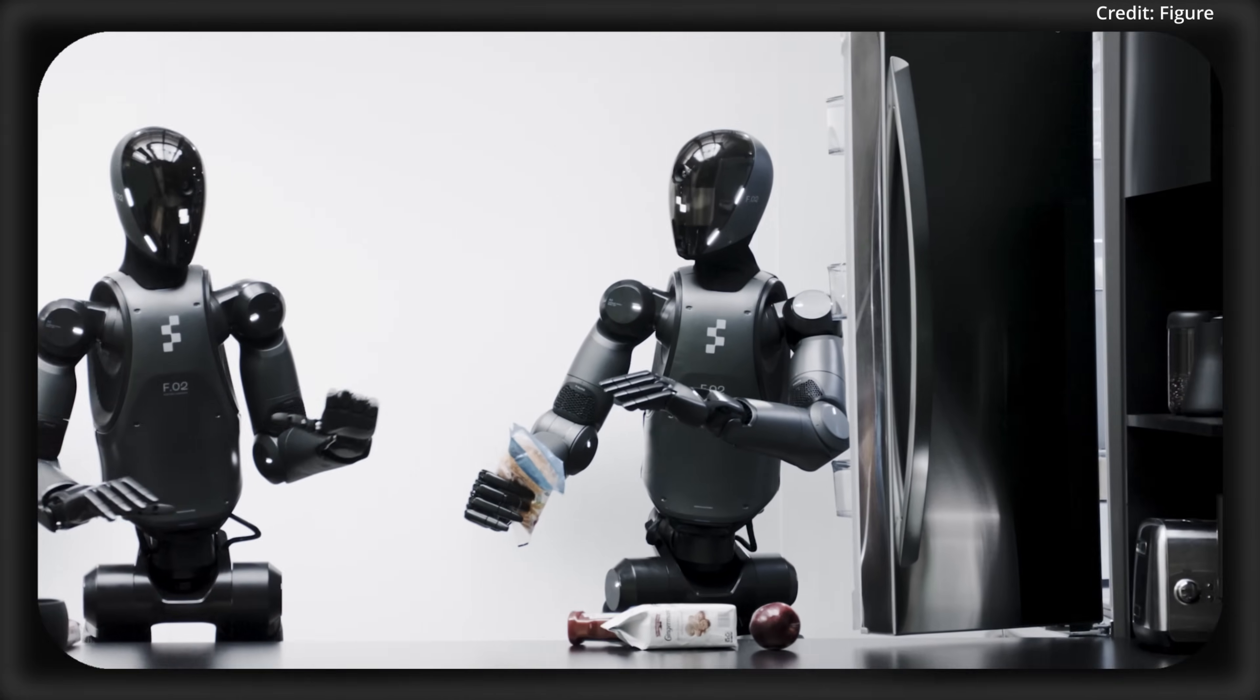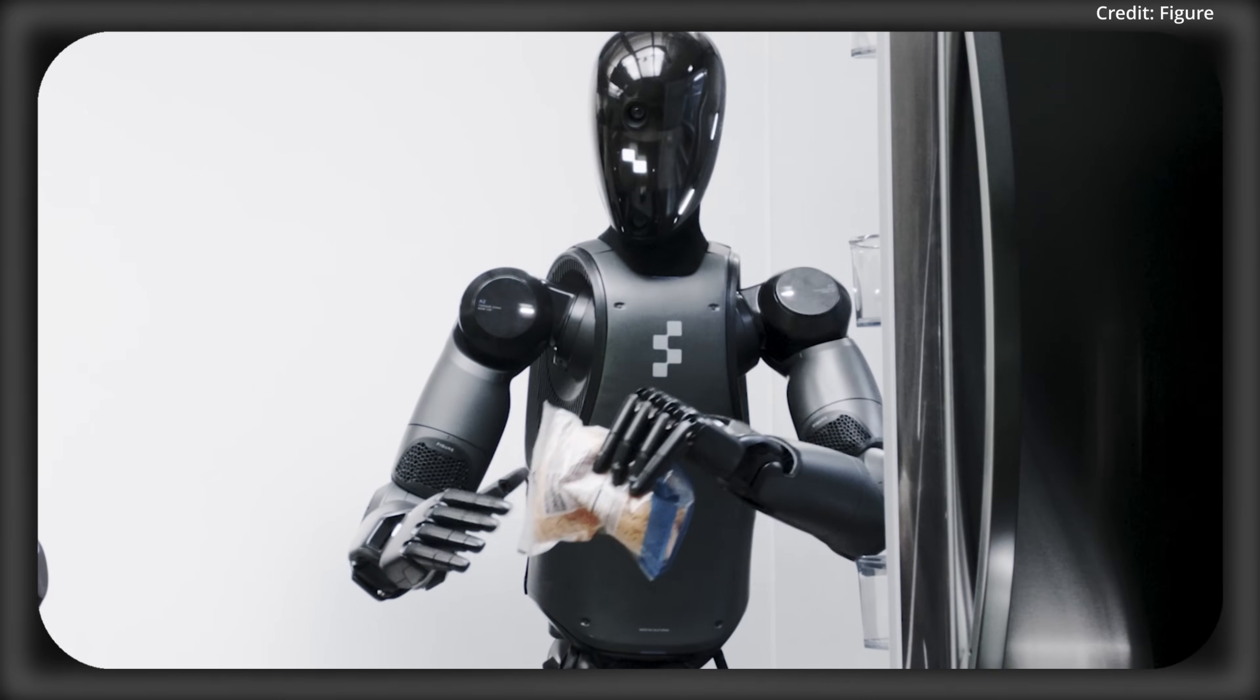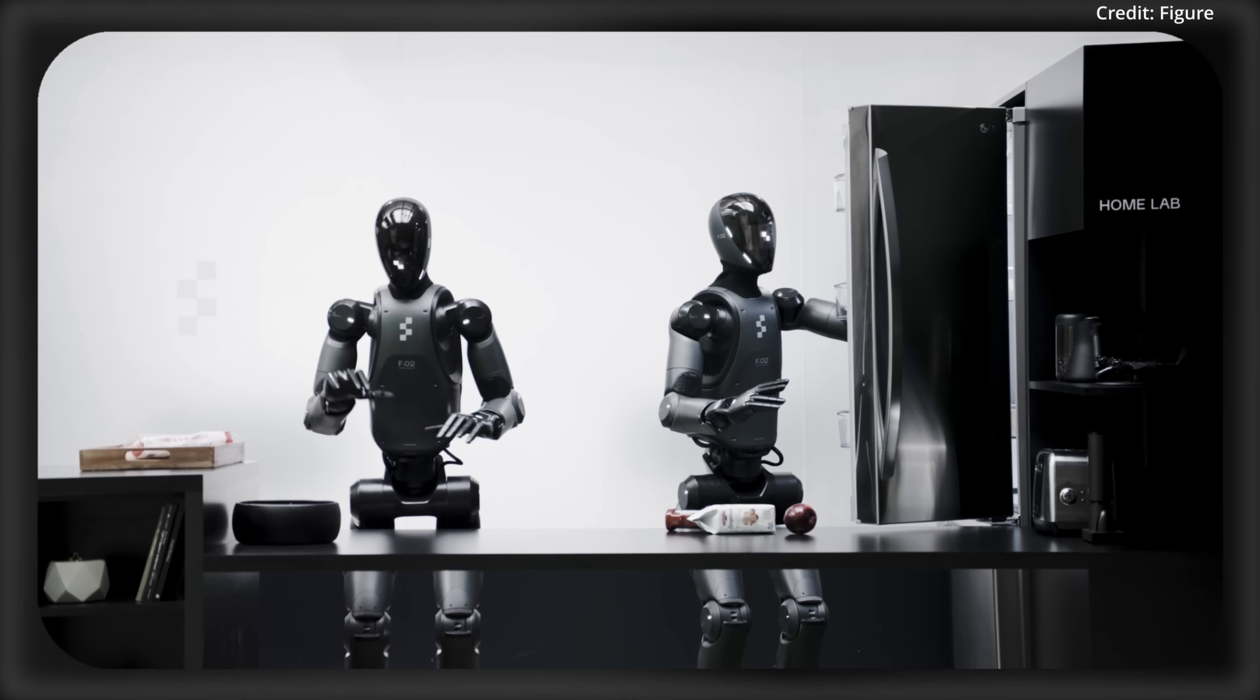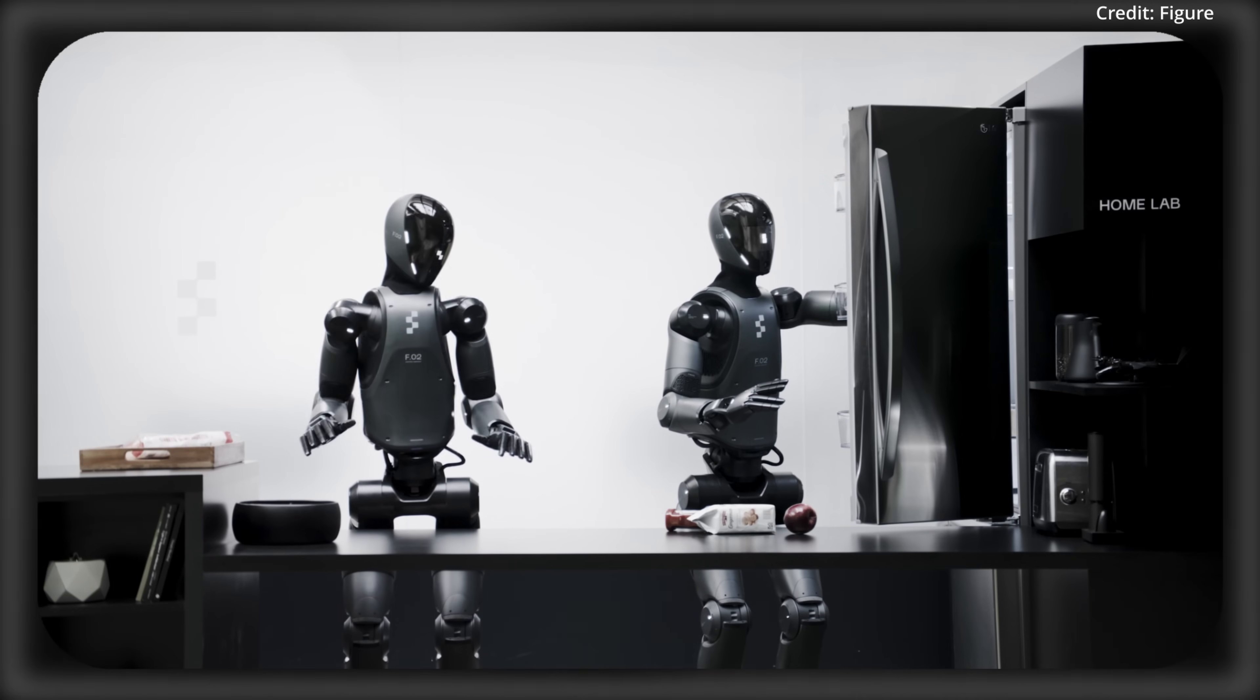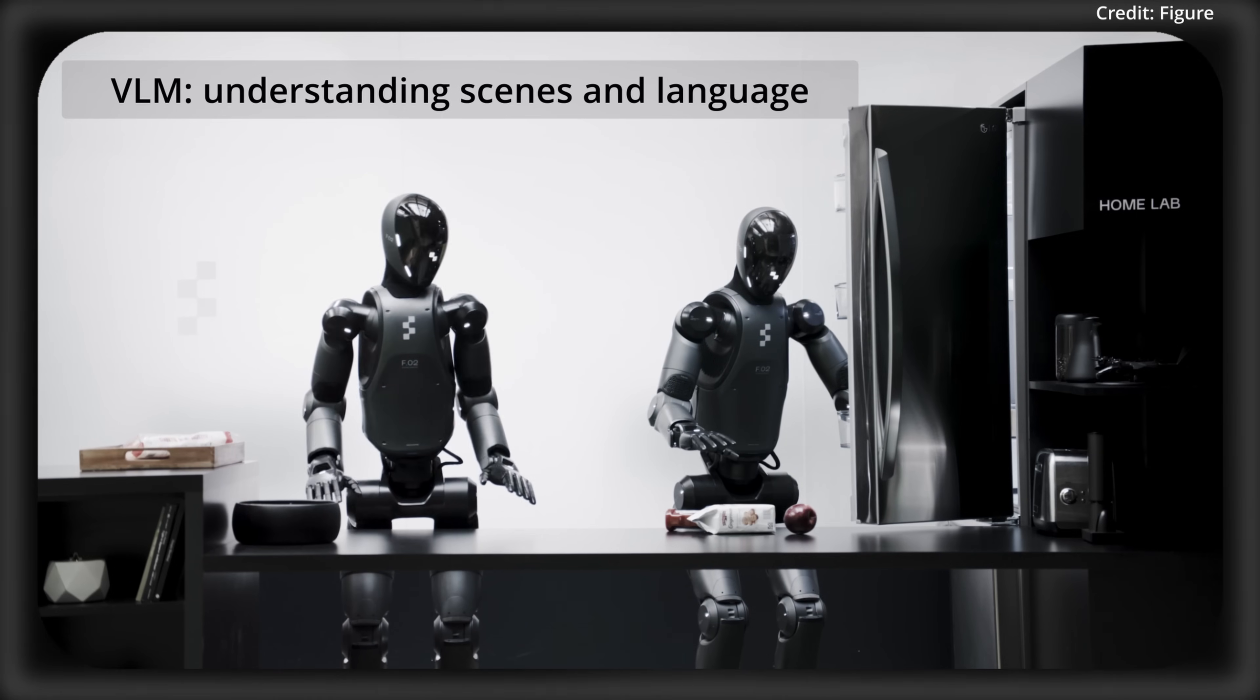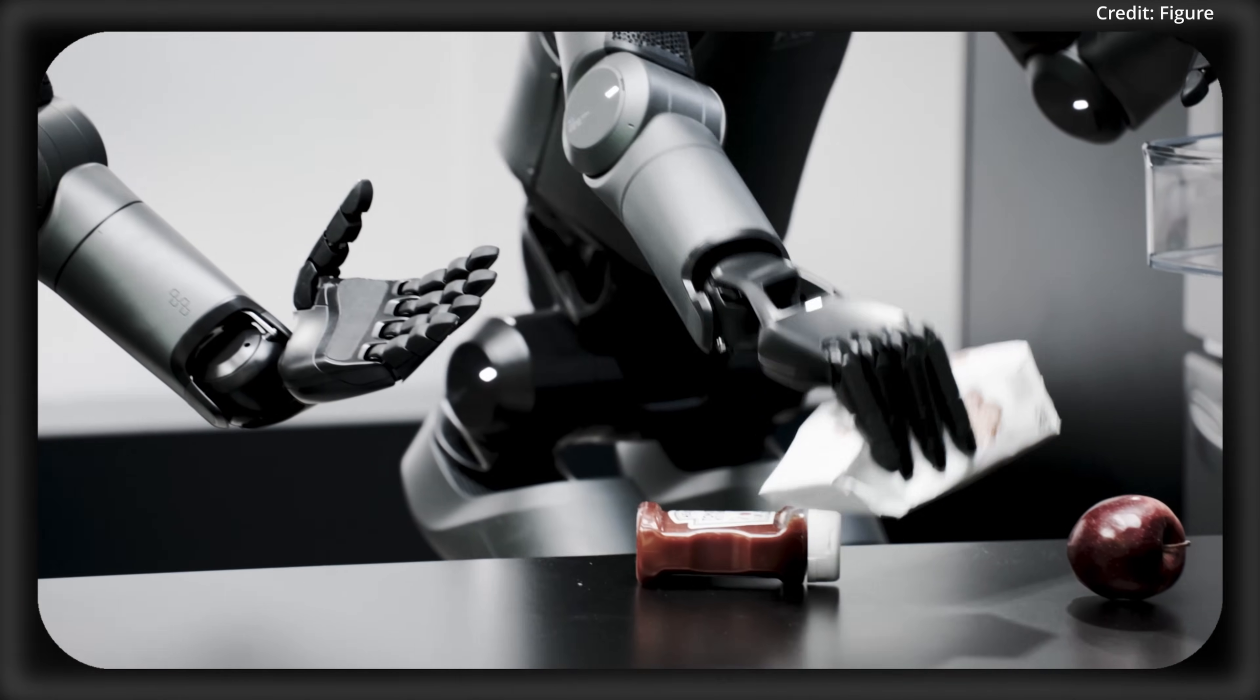In fact, without Helix, teaching a robot any skill like folding a shirt generally requires hours of coding or hundreds of demos or simulations. But Helix completely flips this script by finally using Vision Language models, which excel at understanding scenes and language, and translating them into instant robotic actions for the real world.